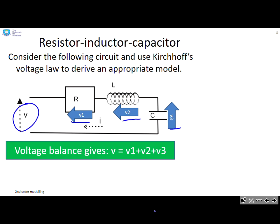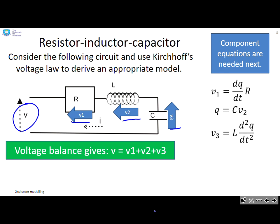So now we write the component equations. We've got the component equation for the resistor, the one for the capacitor, and the one for the inductor. And here you'll notice I've written all the component equations in terms of charge because that makes life easier. So now we take all those together and we end up with our model: V equals L d²q/dt² plus R dq/dt plus q/C.